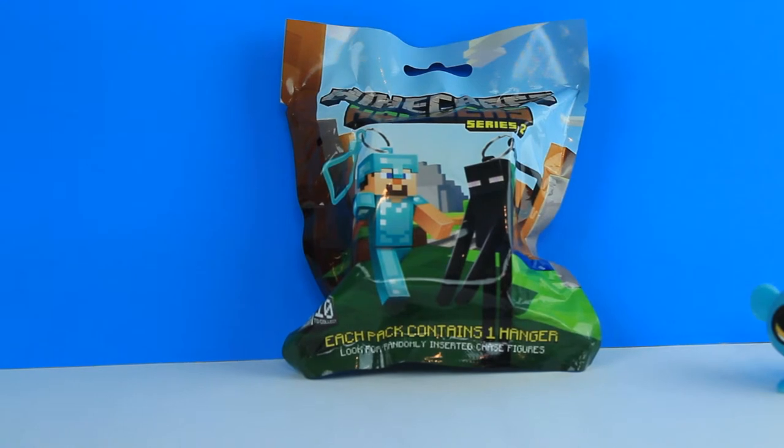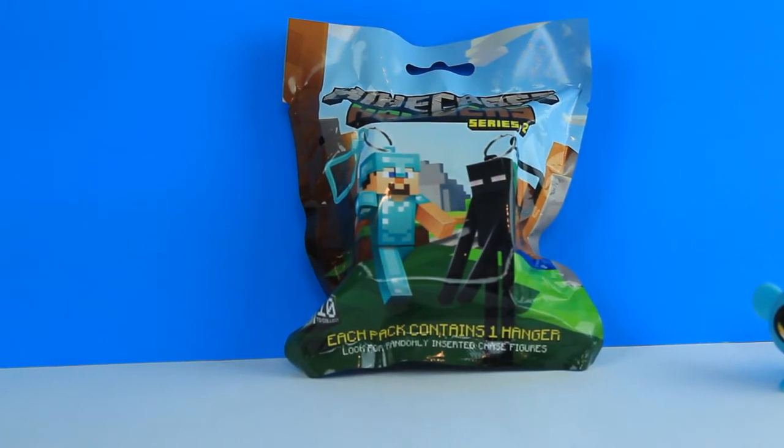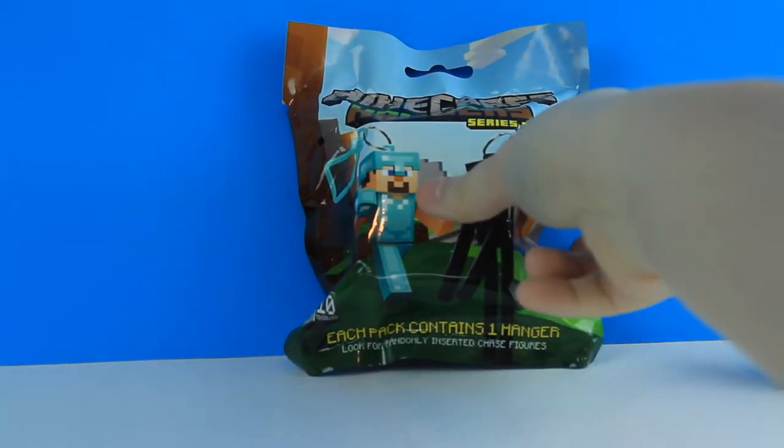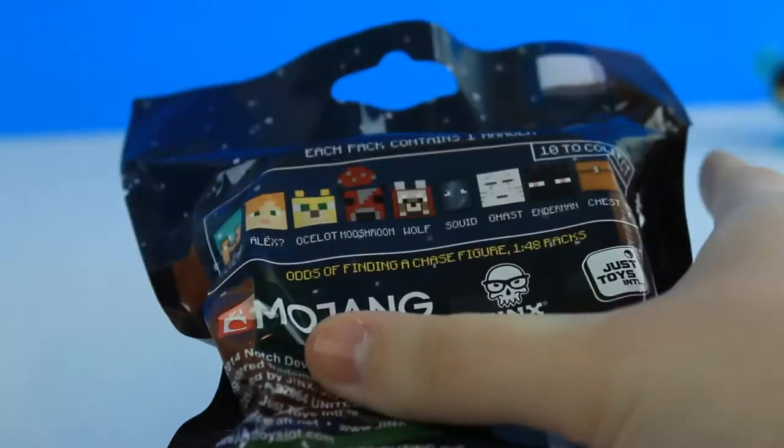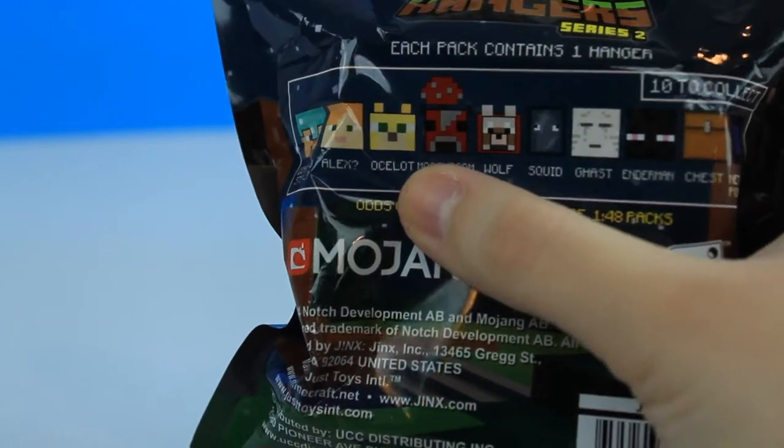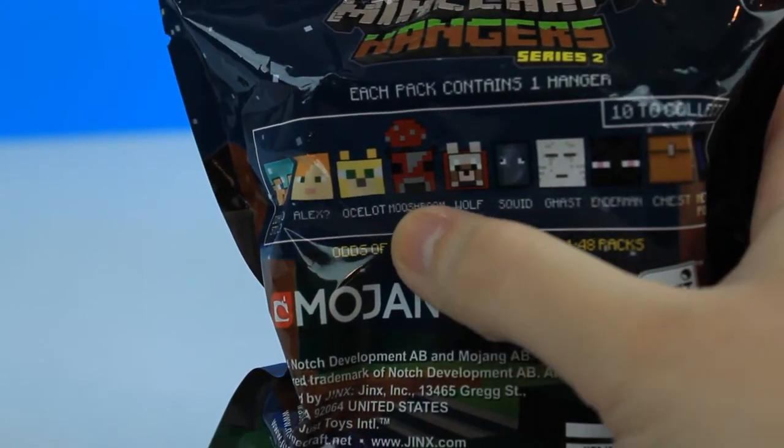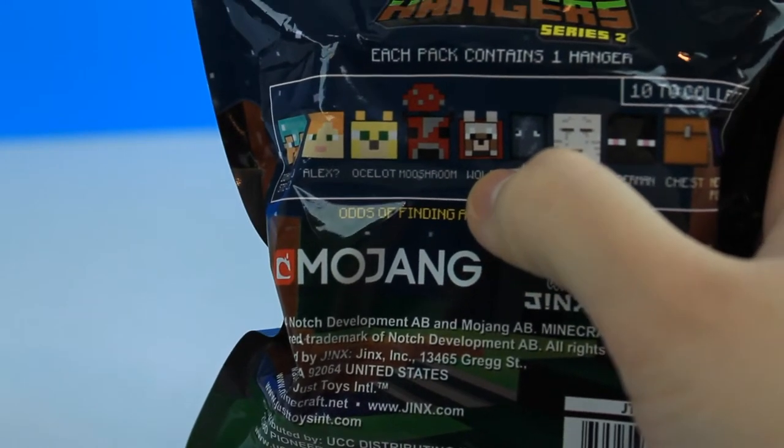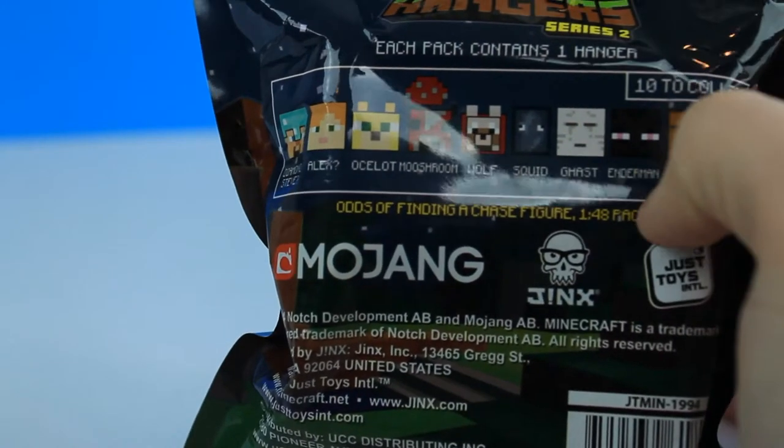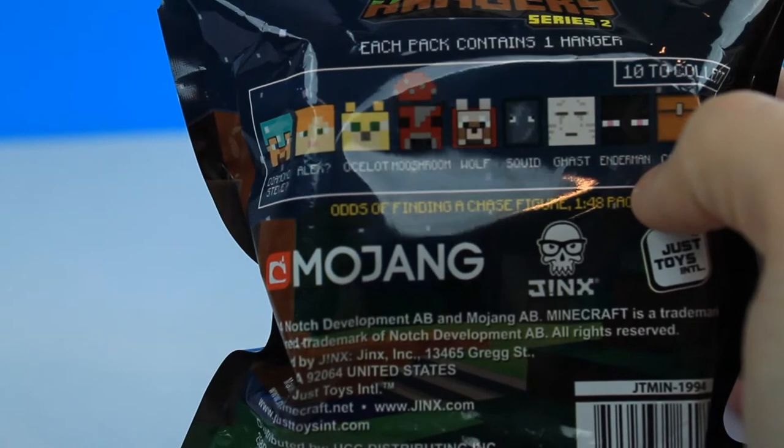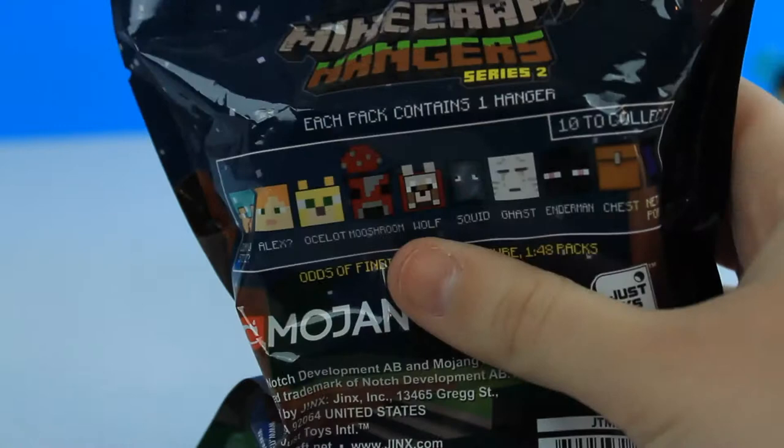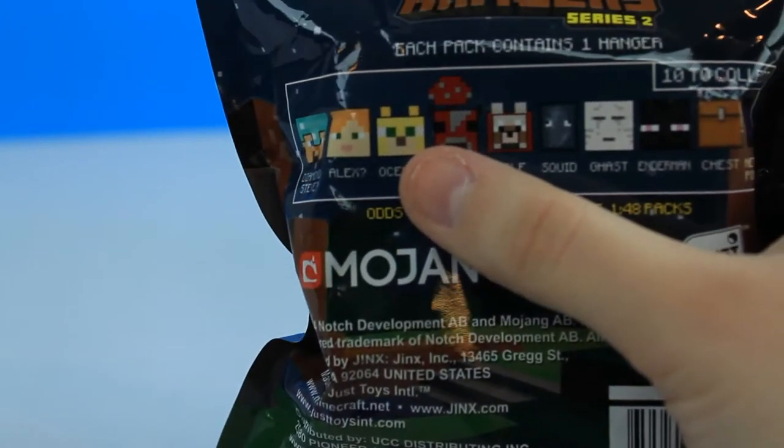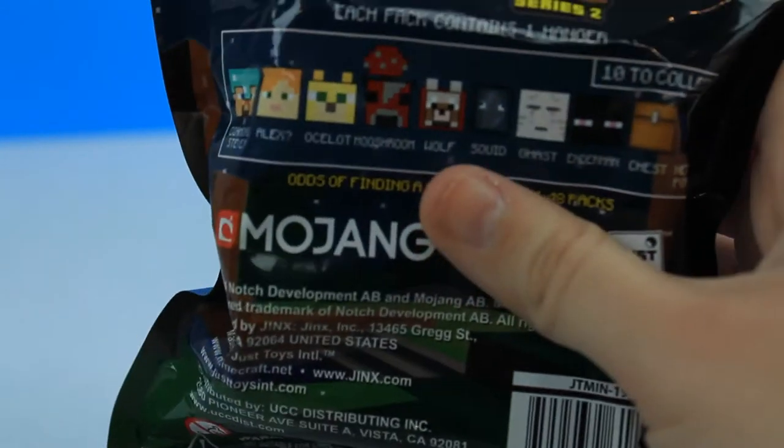I'm gonna put her aside and open our Minecraft hanger, which I am super excited about. So last but not least is our Minecraft hanger. Let's see what we have inside. I really hope we got an ocelot. I have the mooshroom, I have the wolf, I have the squid, I have the ghast. I really want an Enderman too because they're cool. Oh and I have a Steve. So I just really want that ocelot. Let's get it opened.